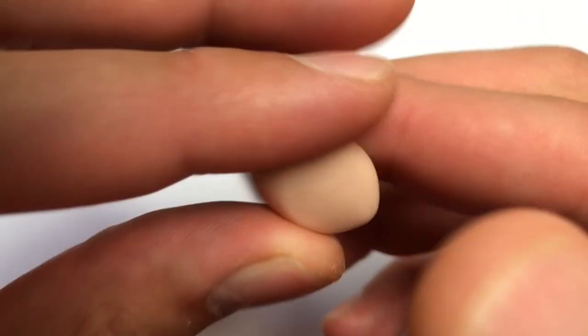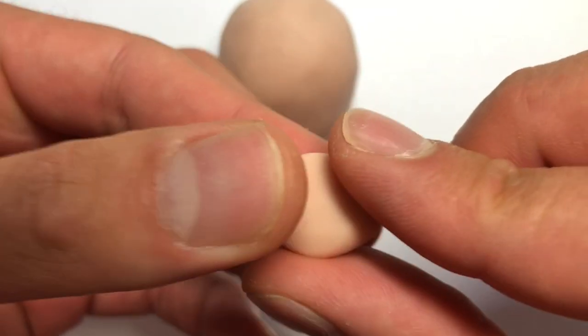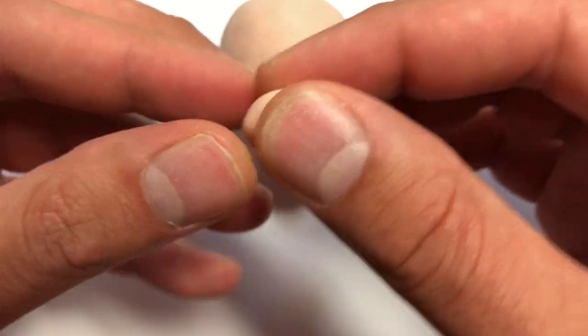Next we're going to do the upper lip and the area of the upper lip with the cupid's bow. I'm going to do that by rolling up a piece of clay and then shaping out this little triangular shape.